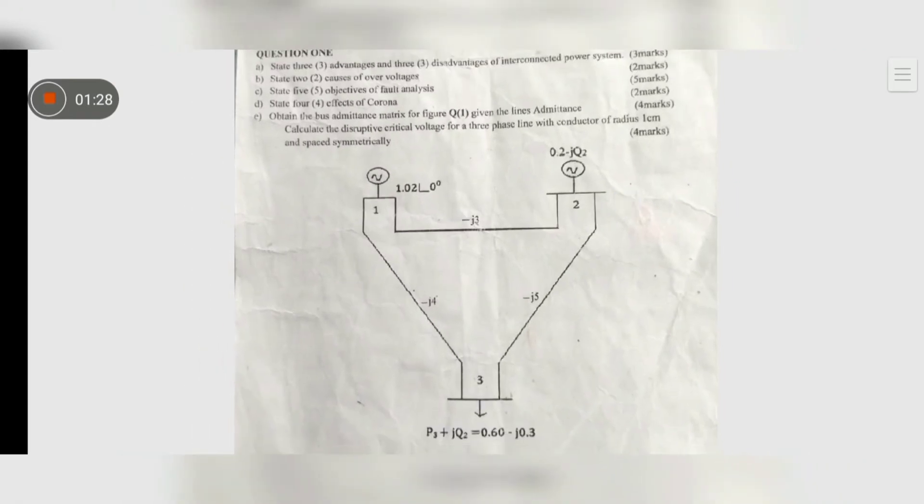This is what they call bus admittance. These are what bus admittance look like. So we are to calculate, obtain the bus admittance for the figure given the line admittance. The line admittances are minus j3, minus j4, minus j5. So we are going to calculate the bus admittance.